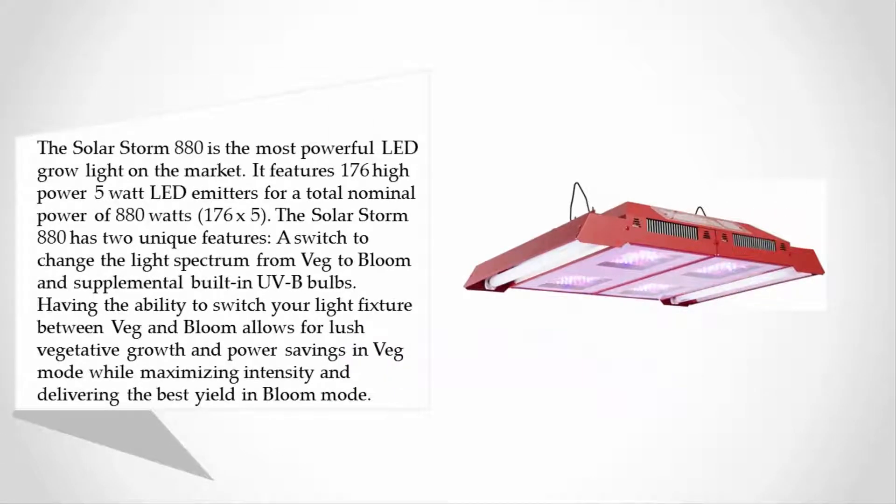It features 176 high power 5 watt LED emitters for a total nominal power of 880 watts. The Solar Storm 880 has two unique features: a switch to change the light spectrum from veg to bloom and supplemental built-in UVB bulbs.